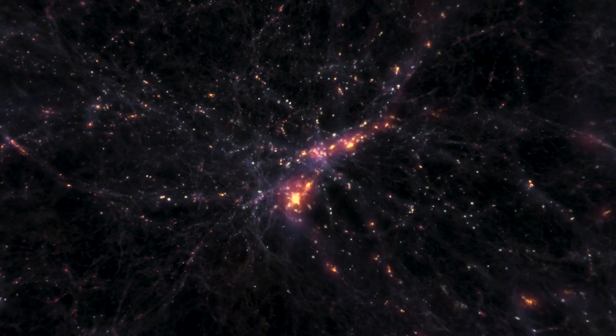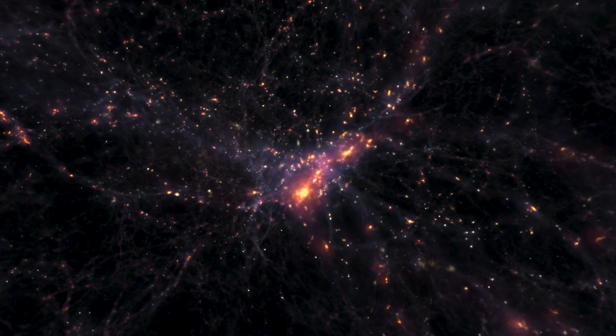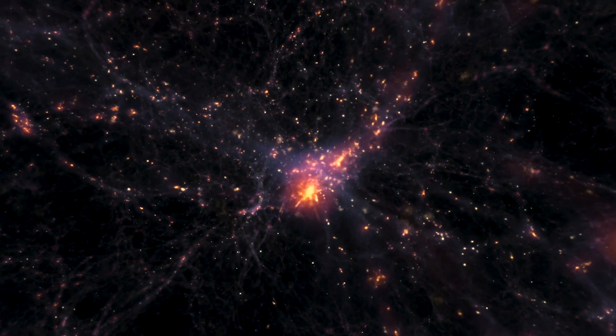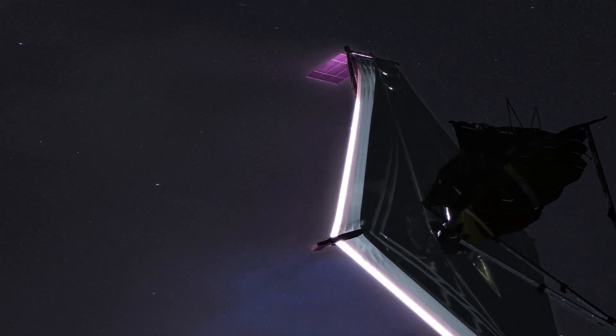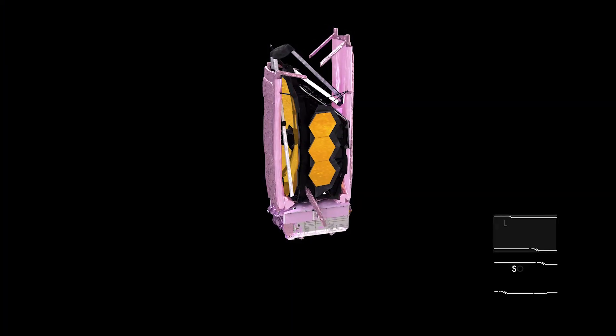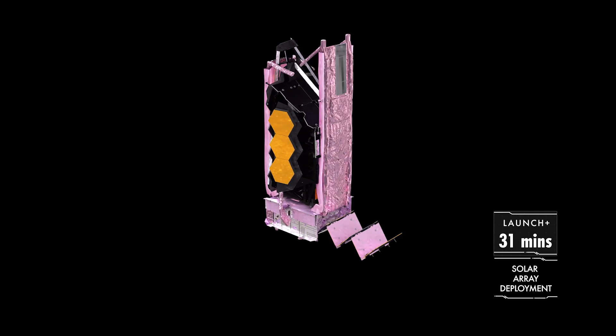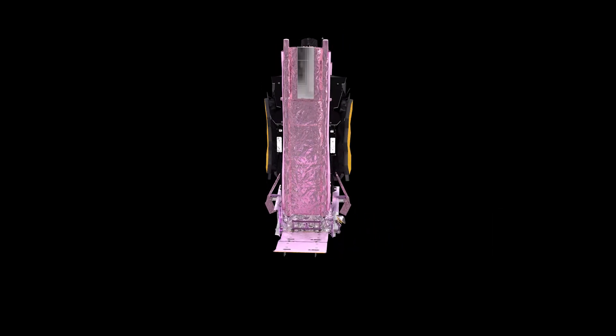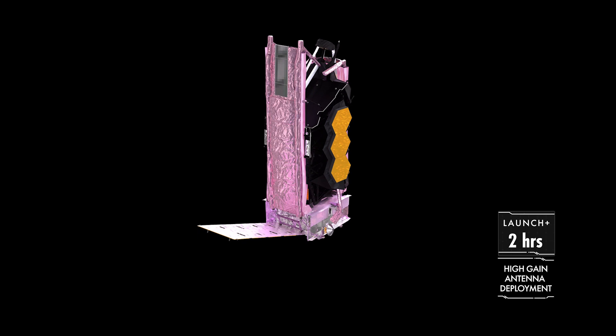Webb is NASA's largest and most powerful space science telescope ever constructed. Webb's enormous size and frigid operating temperature present extraordinary engineering challenges. After launching from French Guiana, the observatory will travel to an orbit about 1 million miles away from Earth and undergo six months of commissioning in space.